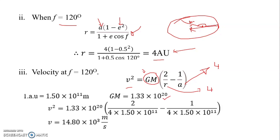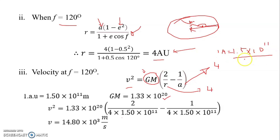Remember to convert to SI units because velocity is in meters per second. 1 AU = 1.5 × 10¹¹ m, so multiply any AU value by 1.5 × 10¹¹ to convert to meters. We convert both r and a from AU to meters before substituting. The GM value is 1.33 × 10²⁰.